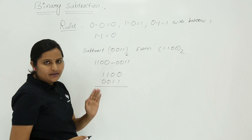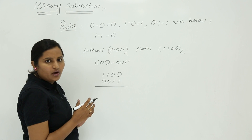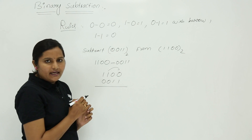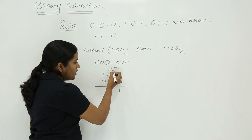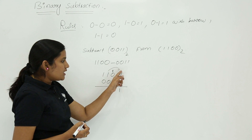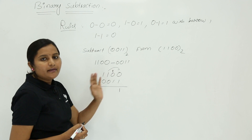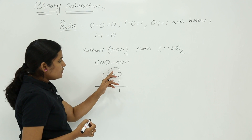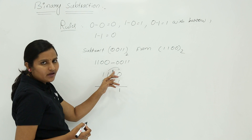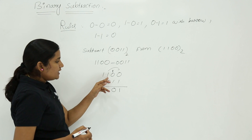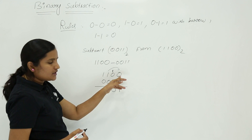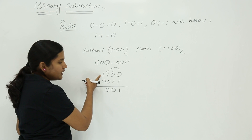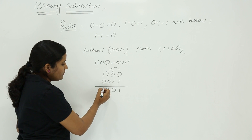Where do we get that borrow? Here you are not having any 1 to get a borrow, so see the next place. You have a 1 there; from that 1 you take a borrow, and the result is 1 with borrow 1. Whenever you take that 1 to this side, it leaves a borrow on the middle 0s. So 0 minus 1 means 1; this 1 is given as borrow for the first bit. Then 0 minus 0 is 0, and 1 minus 0 gives you 1.